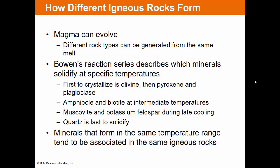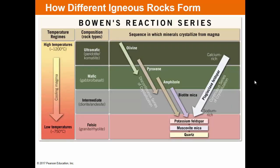One volcano can generate different rocks because magmas evolve over time. Bowen's reaction series describes which minerals solidify at specific temperatures. First to crystallize is olivine — a very low silica mineral — and last to crystallize is quartz at a lower temperature. In between are amphiboles, biotite, muscovite, and potassium feldspar. Minerals that form at the same temperature range tend to be found in the same igneous rock. At 1,200 degrees, ultramafic rocks begin to crystallize; down to 1,000 degrees, mafic; then 850 degrees, intermediate; and finally felsic rocks crystallize at lower temperatures.